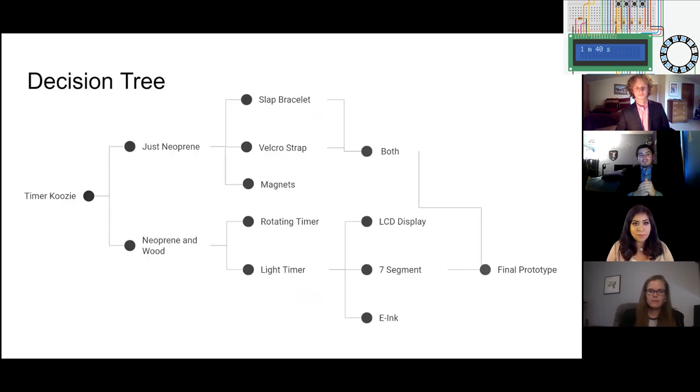We went with this decision tree. We started with the timer QZ and we had different iterations. The biggest change we had was the e-ink display, which we were going to use for our final product. However, due to the refresh rate of it, we decided to go with the seven segment display.